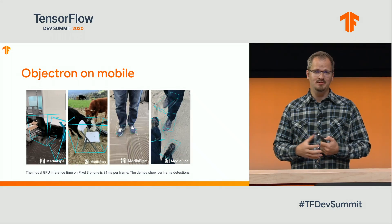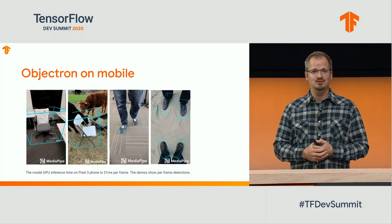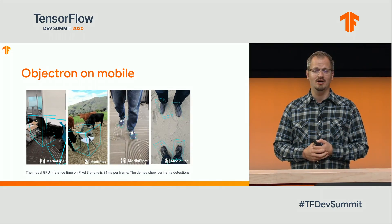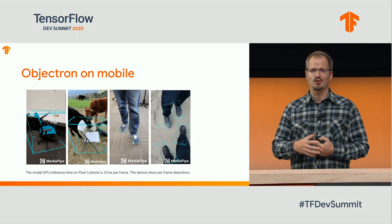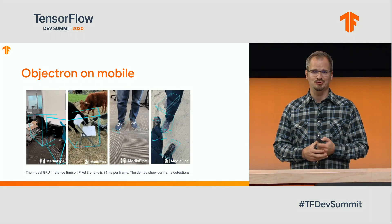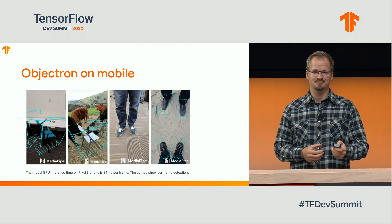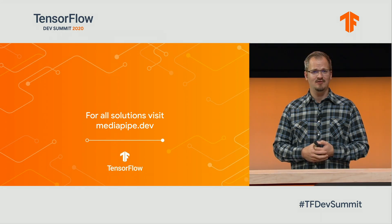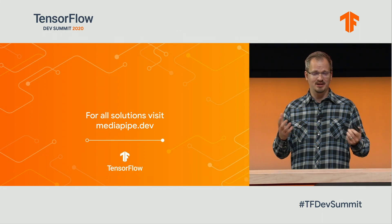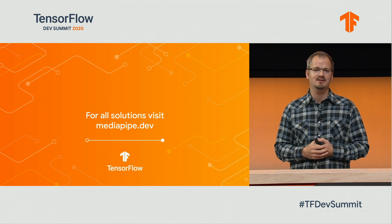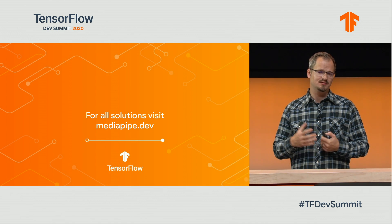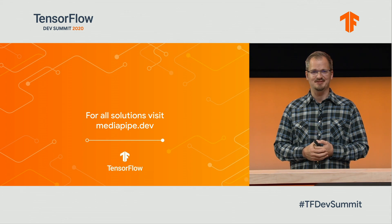Objectron runs on mobile. We released two models: one for localizing chairs, as you can see on the left, and one for shoes. If you want to play around with all of these solutions, please visit mediapipe.dev, where you can also find other models around segmentation, for example. Thank you.